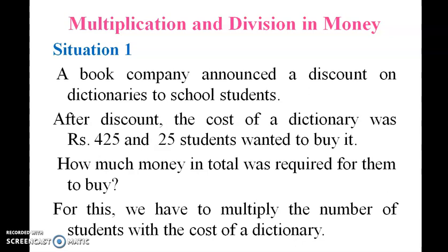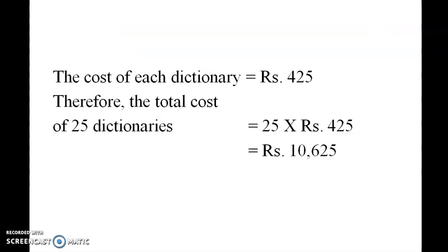There are 42 — actually 43 items. Do we multiply it? Yes, multiply it to find the total cost for 25 students.